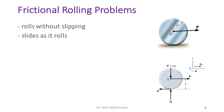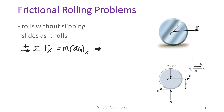Summing forces along x, taking rightward as positive: the sum of forces along x equals m·a_G, giving P minus f equals m·a_G.